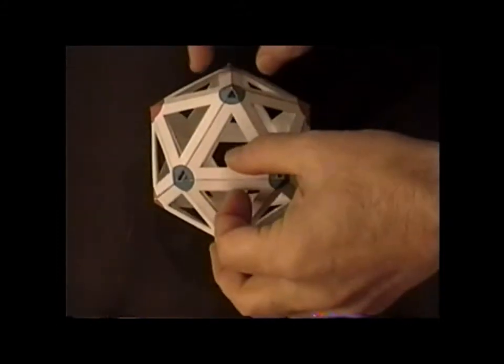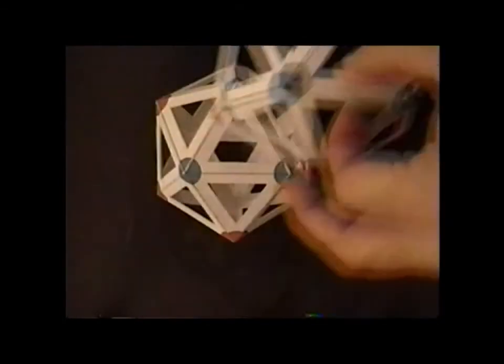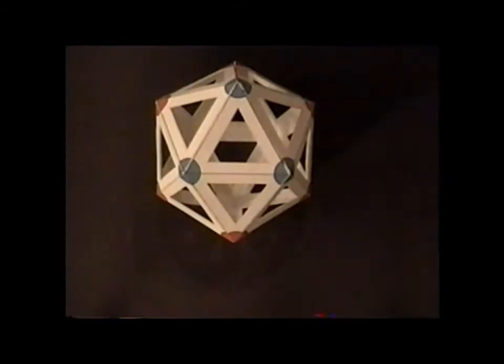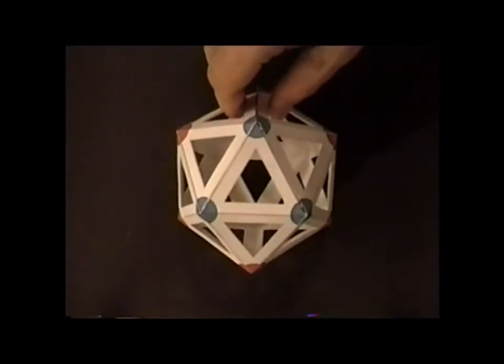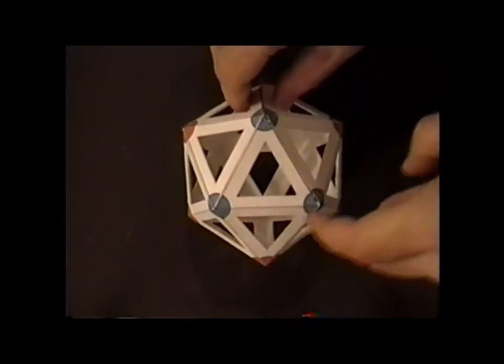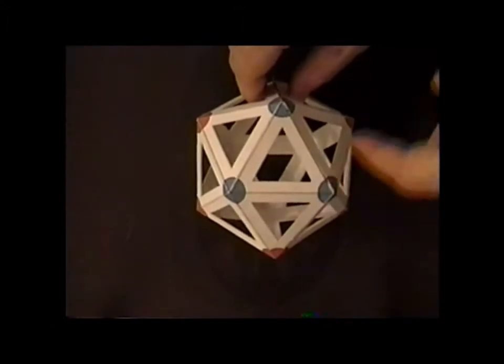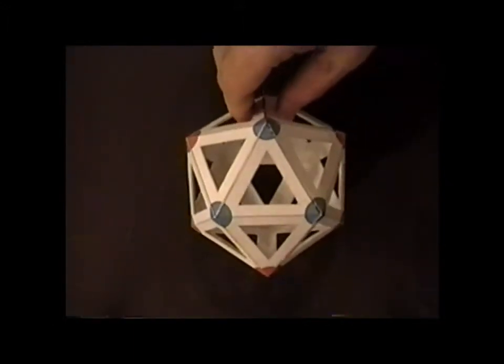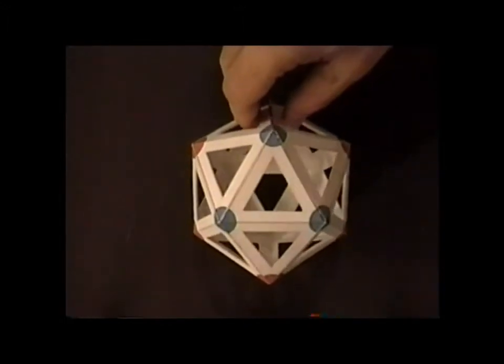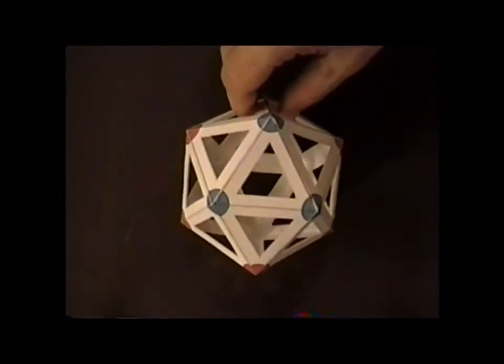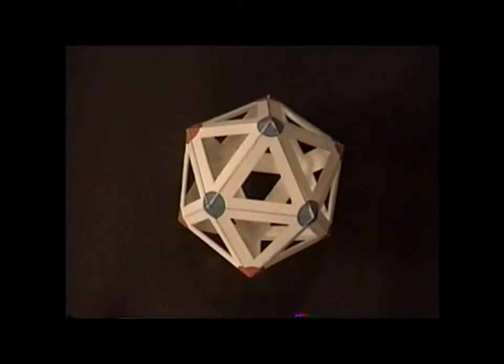We also might notice that if we take the cap off and we look down the axis, the C3 axis, in front we see a triangle and in back we see an inverted triangle. We might recognize this particular arrangement as being very similar to the staggered conformation of ethane. As we recall, the staggered conformation of ethane belongs to the point group D3D.